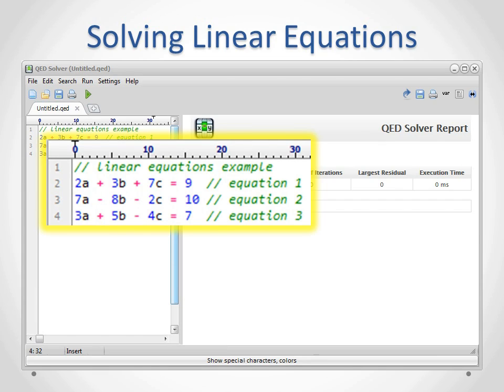Variable names are case sensitive. In this problem, the multiplication operators between the coefficients and variables are implicit. Multiplication operators are optional where there is no ambiguity.